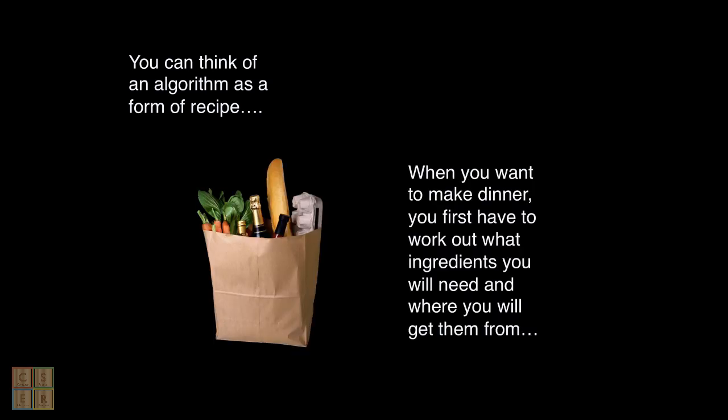When you decide you want to make a particular recipe for dinner you first start by looking up in a cookbook or thinking about what ingredients you need, identifying what you already have and what you need to buy and then working out what shops you need to go to in order to buy those extra ingredients.